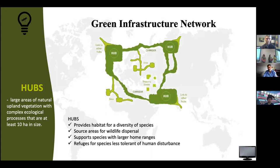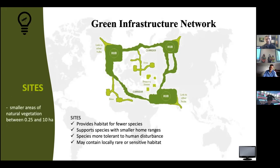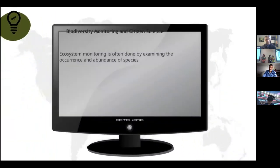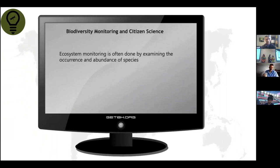The green infrastructure network is basically a bunch of land set aside, meant to guide future decisions in land acquisition, development, conservation, and city management. It consists of three main components: hubs, which are very large core areas; corridors, which connect large hubs and allow for movement of creatures and animals between them; and sites, which are basically smaller versions of hubs. Another really important pillar of the biodiversity conservation strategy is biodiversity monitoring, which is done by examining the occurrence and abundance of species, and is often logistically difficult.